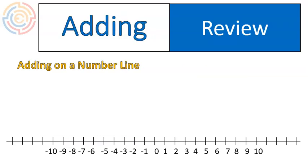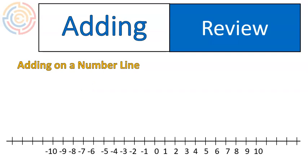When we add on a number line, it looks like this. Here's our addition question — one plus two. On the number line, one plus two is equal to three. That's what adding on a number line looks like. Here's another example: negative one plus negative two. We start at negative one, add on another negative two, and that brings us to negative three. So a positive plus a positive gives us a bigger positive, and a negative plus a negative gives us a bigger negative. That is really important when talking about the rules for adding integers.